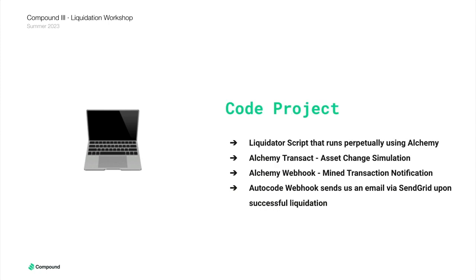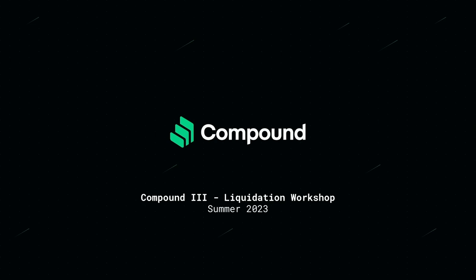Next, we're going to go through our liquidation bot. The liquidator script runs perpetually using Alchemy's APIs — specifically Alchemy Transact to check asset changes in a simulated transaction, ensuring our liquidation is profitable before executing. We also use Alchemy Webhook Mined Transaction Notifications: anytime our address is used in a transaction, it sends a notification to a webhook. We're using AutoCode with a webhook listening that executes code sending us an email via SendGrid. All code is open source — check the video description for the GitHub repository link.